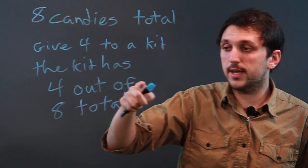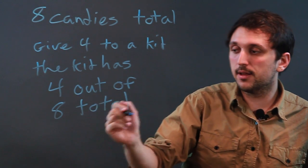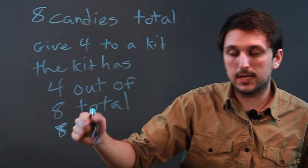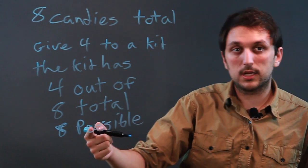Now, when you say they have four out of eight total, you can also say eight possible—that was supposed to be an eight—eight possible candies.